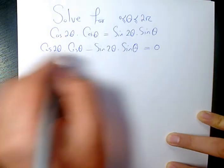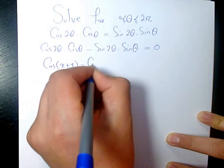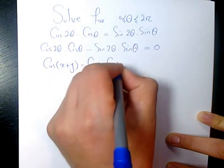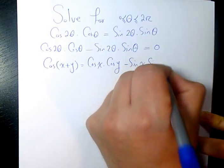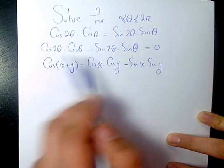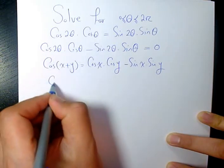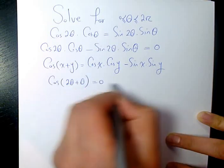And then I need to use compound angle, so we have cos(x+y) equals cos x cos y minus sin x sin y. So I can have the original equation and write it as cos(2θ + θ) equals 0.